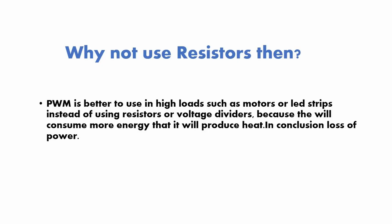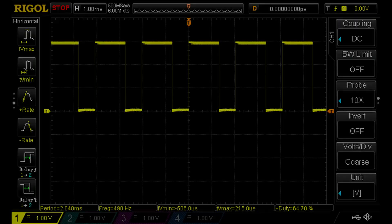The most frequently asked question is: why not use resistors? Pulse width modulation is better to use under high load, such as motors or LED strips, instead of using resistors or voltage dividers, because they will consume more energy and produce heat — in conclusion, a loss of power. So we prefer to use a PWM signal rather than voltage dividers, which waste power.